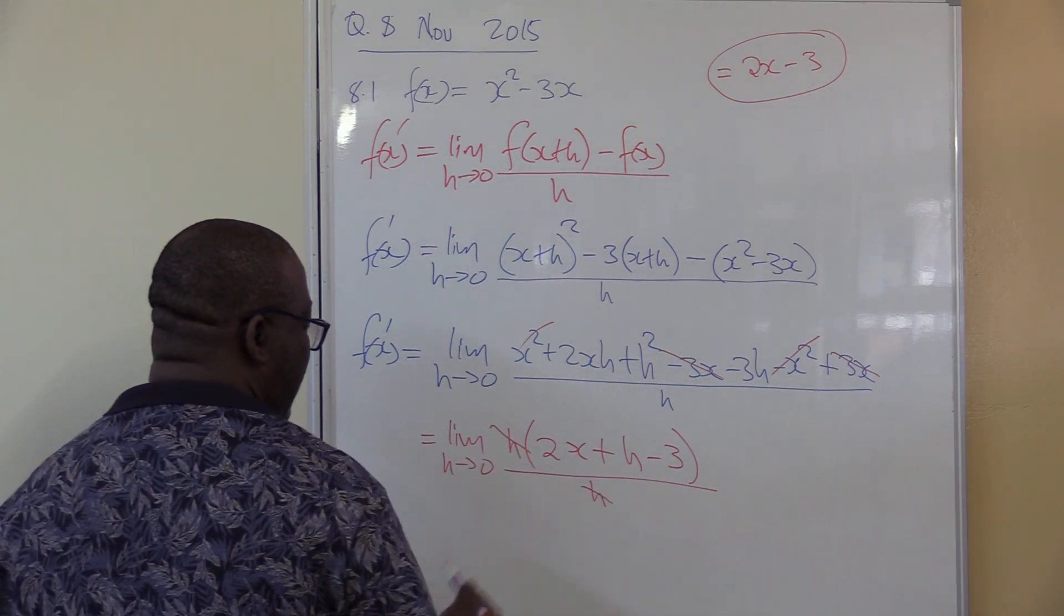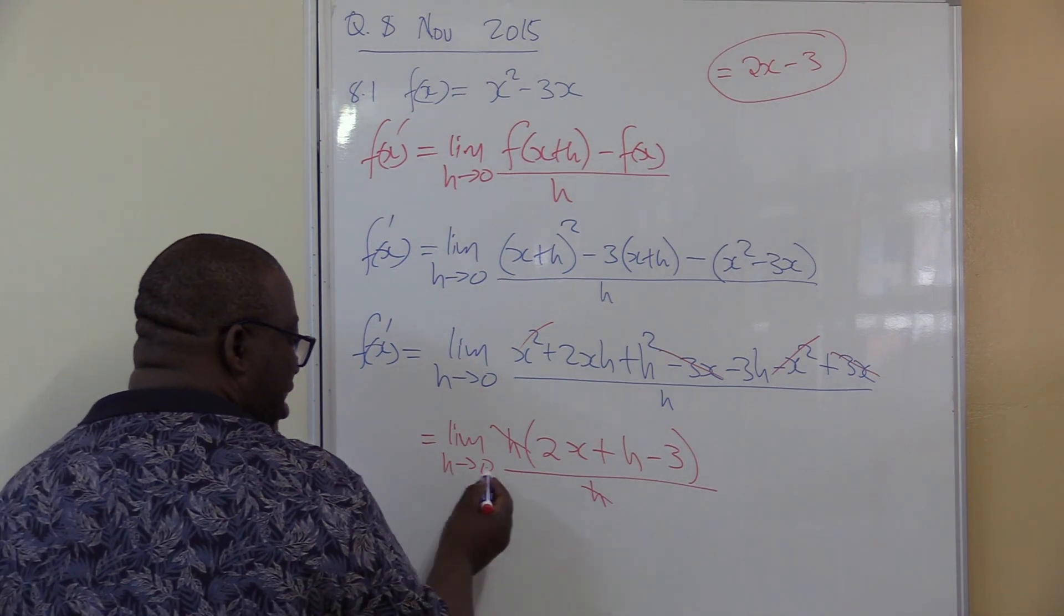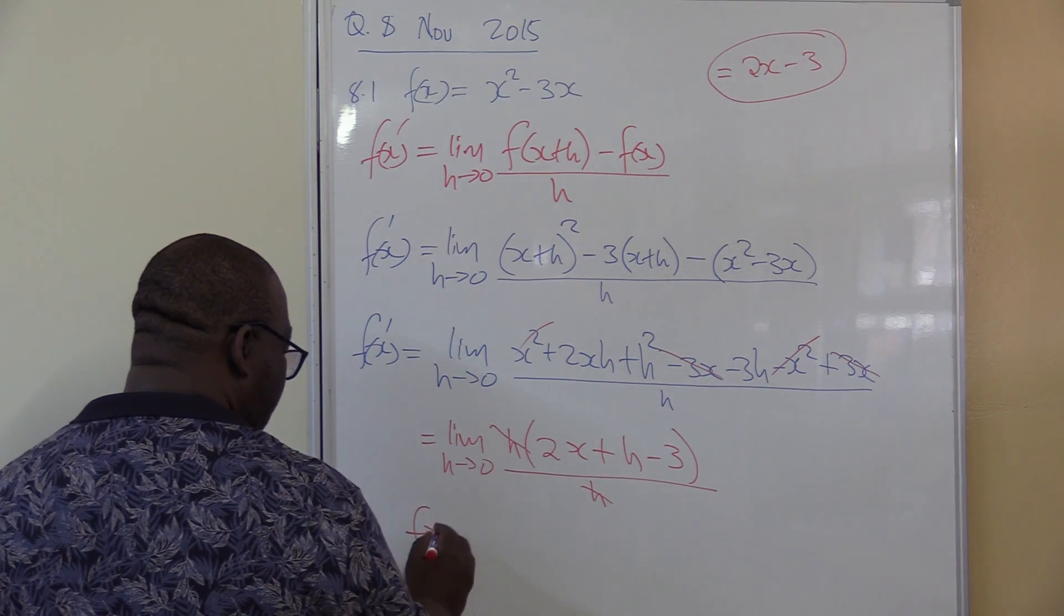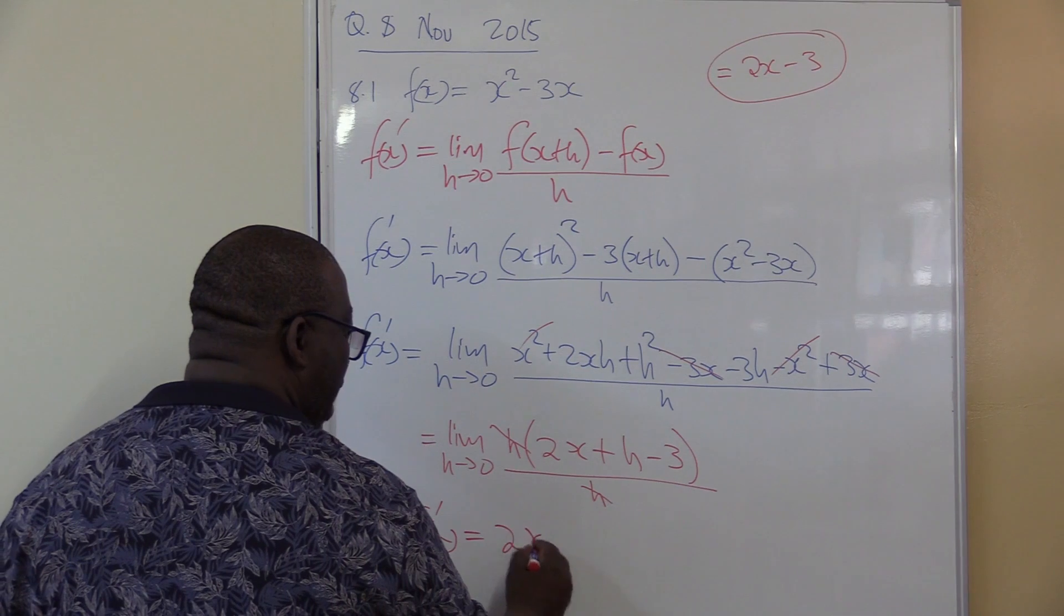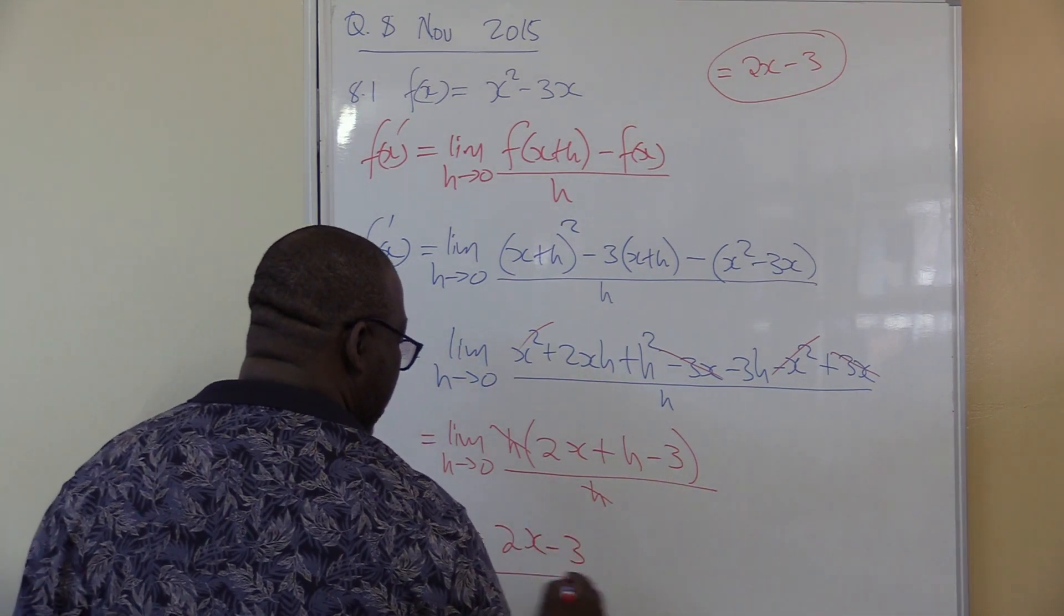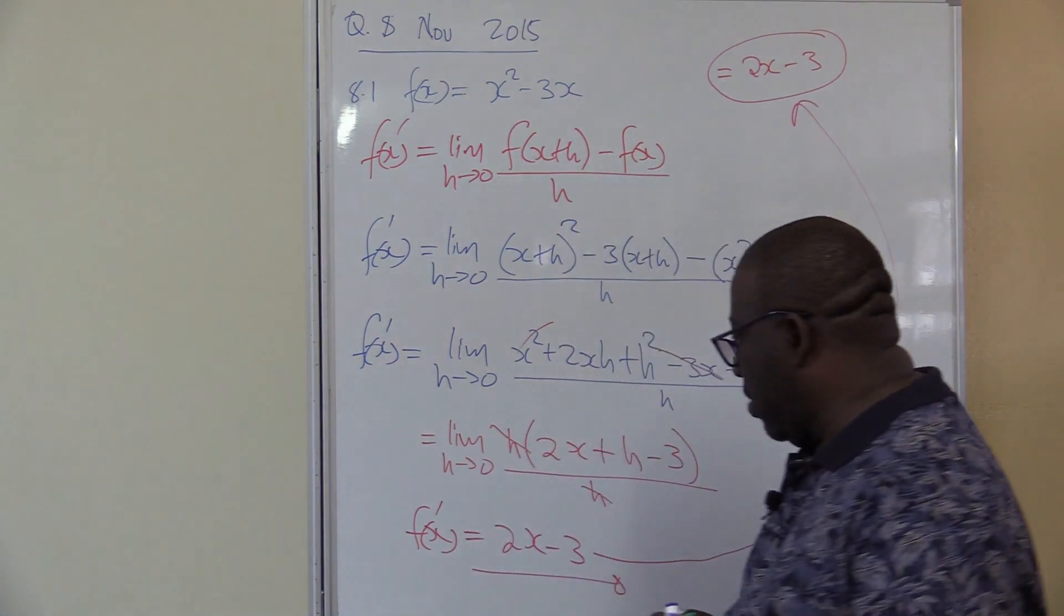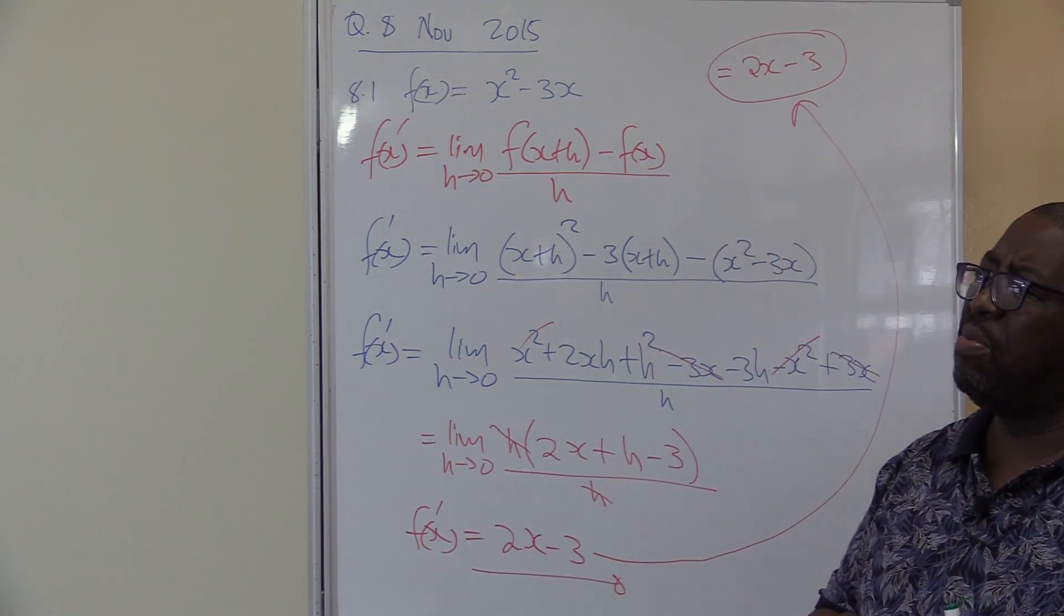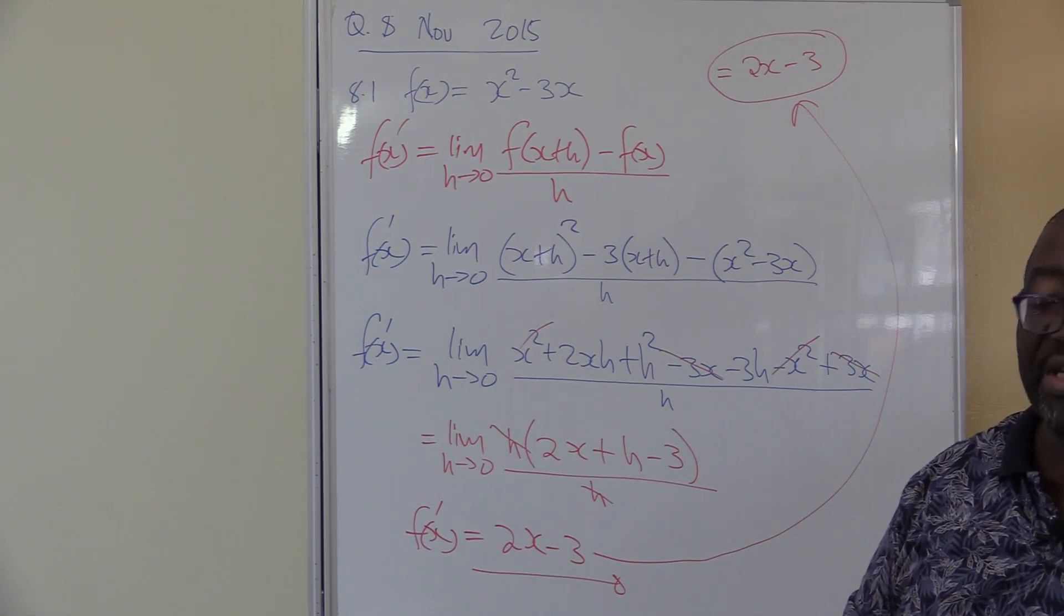So they divide there. But h turns to zero. Whether it's h, you push in zero. So if you push in zero there, our f of x prime will then be equals to 2x minus 3. That is our solution. Exactly what we said we'll have at the end of the day. I want us to move on to another problem which is a fraction, for example. How do we deal with that one?